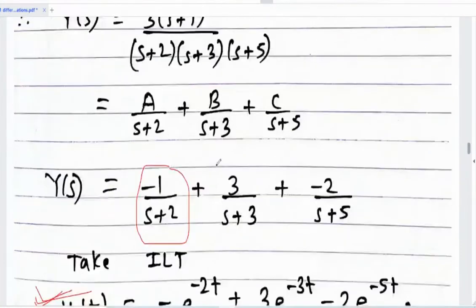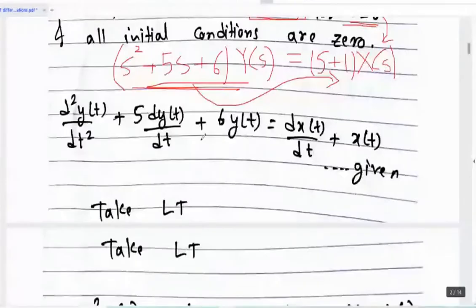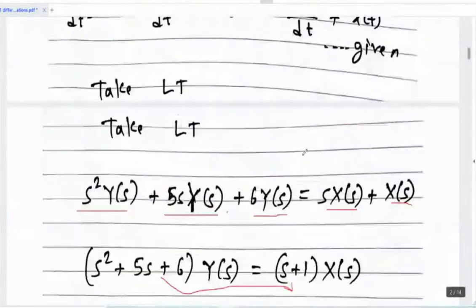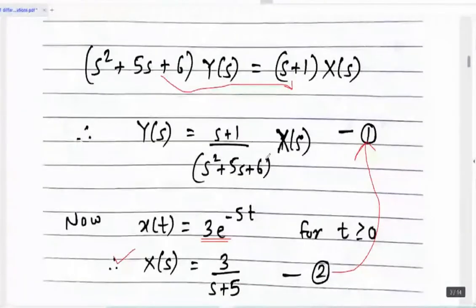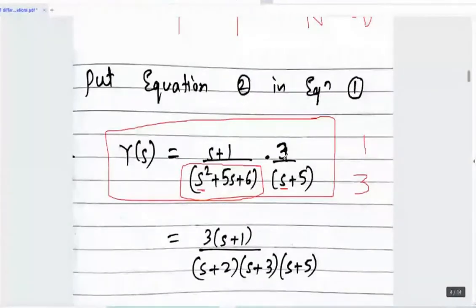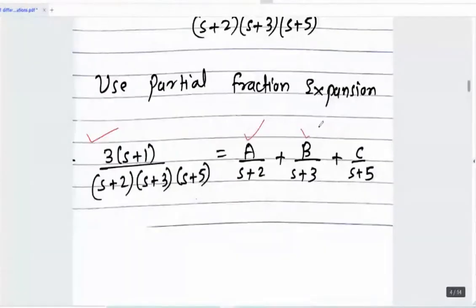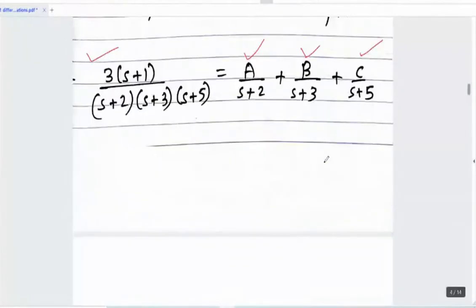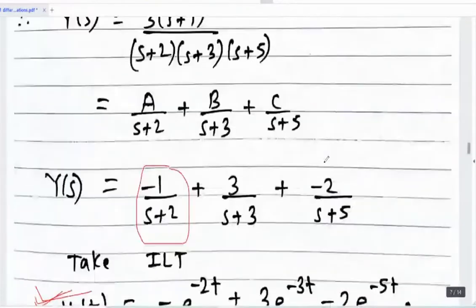So let's summarize: look at the differential equation given, find the Laplace of that, find the Laplace of x(t) also — everything is in terms of Y(s). Then compare numerator and denominator degree. It is proper, so use partial fraction, find out the factors, and then take the inverse. Such a simple process. Now read the next question and try to solve.